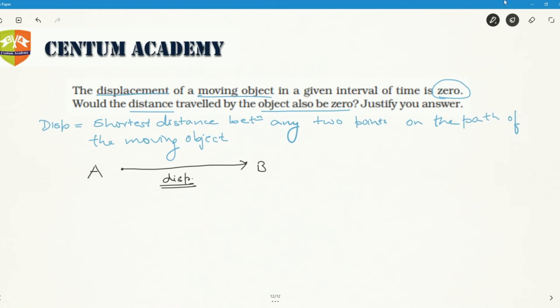Now distance could be anything. The actual path length is called distance. Let's say the body moved like that - this length is distance. Distance could be multiple, right? Between these two points there could be infinite number of paths. But in all cases, the shortest distance is always AB, the line segment joining A and B.